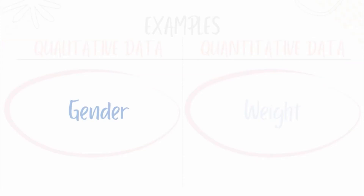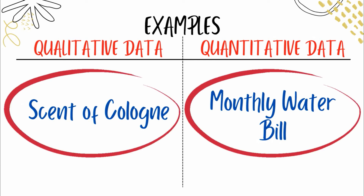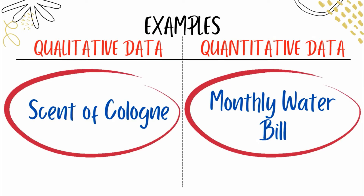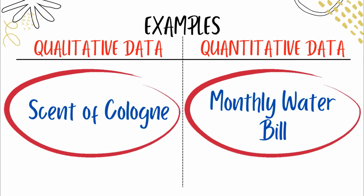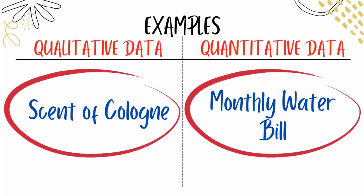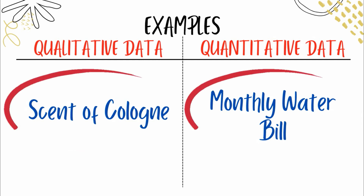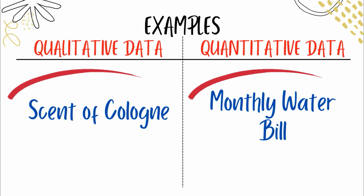Another example of qualitative data is the scent of cologne — it can be flowery, forest-like, or other scents. That's qualitative. For quantitative data, we have the monthly water bill, electricity bill, and internet bill. Those are examples of quantitative data because they involve numbers — we're talking about money.